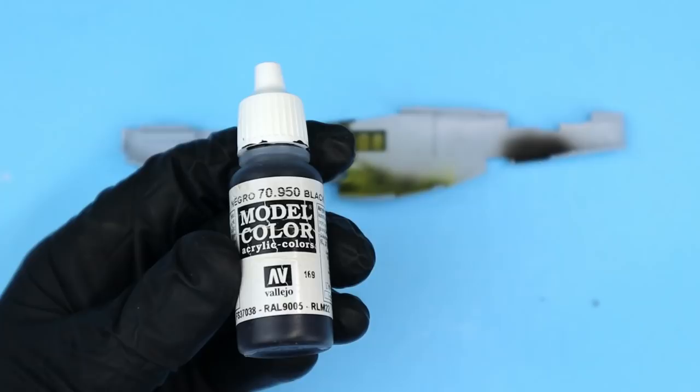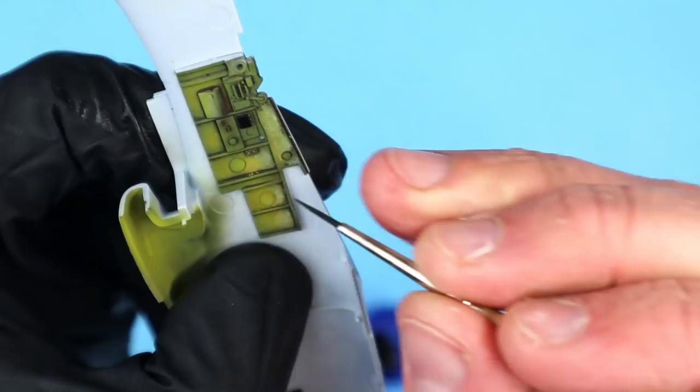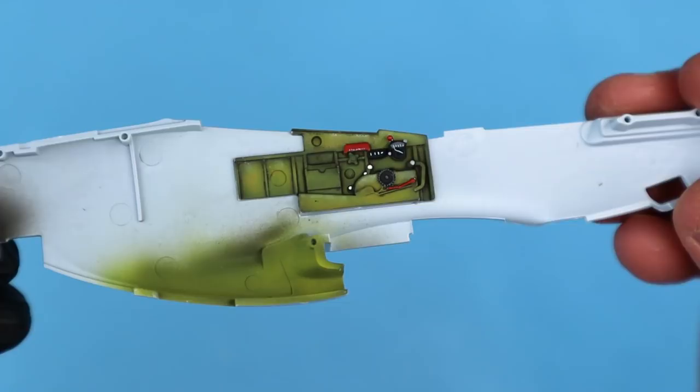To add detail to each of the sidewalls I first painted the various console boxes and switches with Vallejo flat black using a fine tip brush. I followed that up by painting other details using Vallejo gray, red and white. Here's what it looked like at this stage of the game.